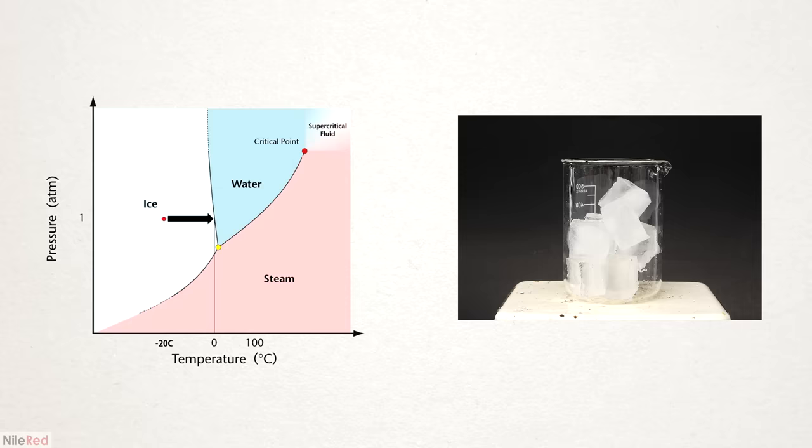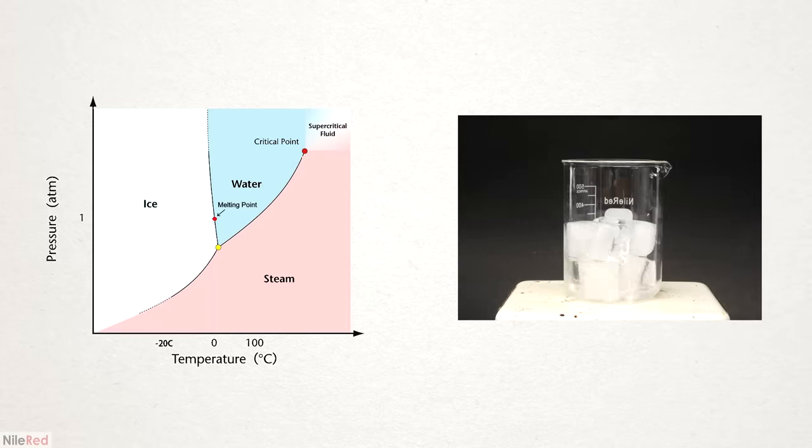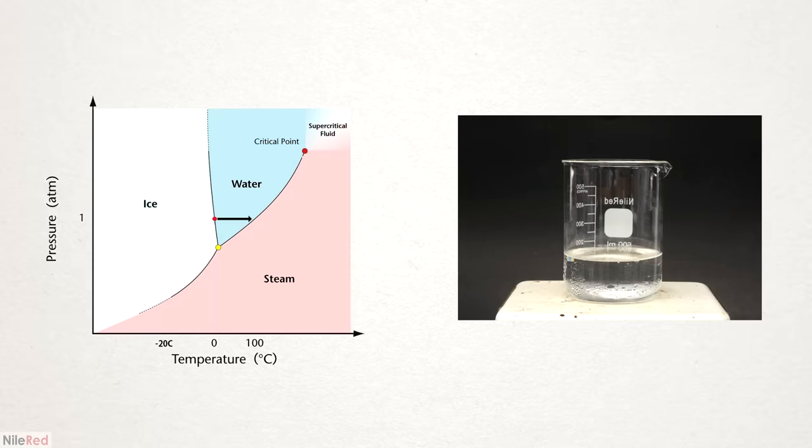right until we reach the line separating the solid and liquid phase, which is at 0°C. At this point, the ice melts because the molecules have enough energy to overcome the forces keeping them together as a solid.